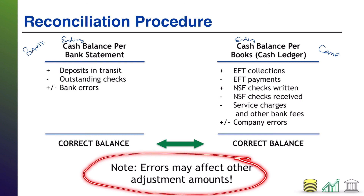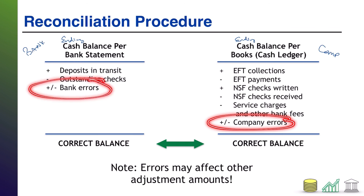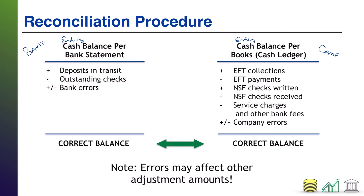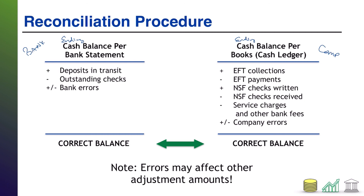One more thing to note: errors may affect other adjustments. Company errors and bank errors have to be fixed on the side of the party that made the mistake. To the extent that an error involved a deposit or a check written, that could affect your calculation of what deposits were in transit or what the outstanding checks were. So whenever you're calculating deposits in transit and outstanding checks, ask yourself whether either party made a mistake with those items — fix the mistake first, then calculate the discrepancy.